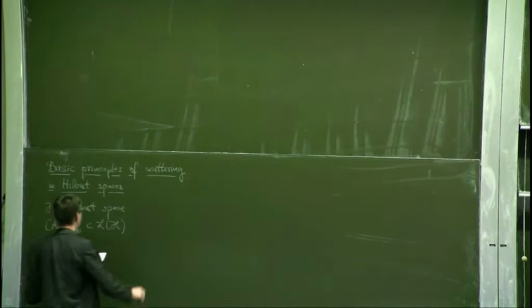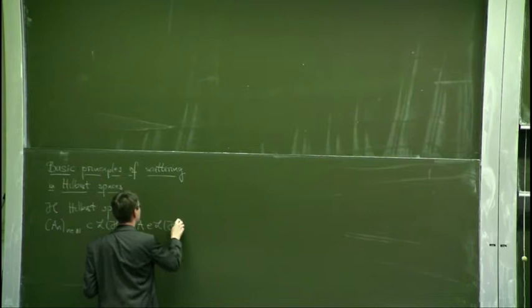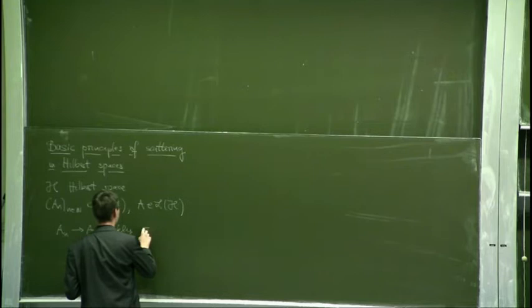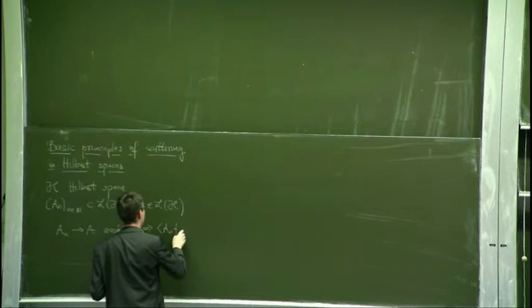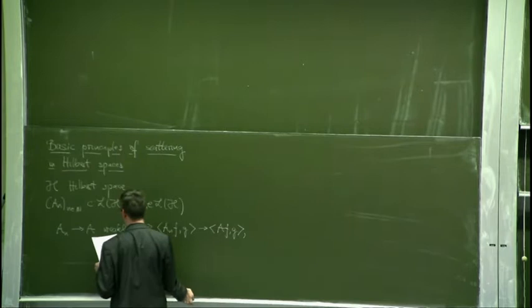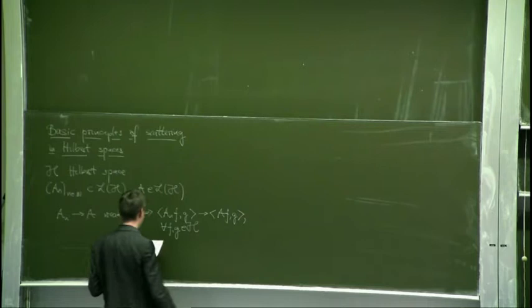Let H be a Hilbert space. I take a sequence A_N for N in ℕ of bounded operators on H, and an operator A in L(H) — the bounded operators on H. Then I say that A_N converges weakly to A if and only if the forms ⟨A_N F, G⟩ converges to ⟨AF, G⟩ for all F and G in H.